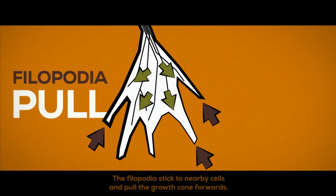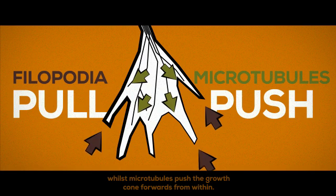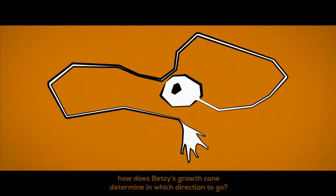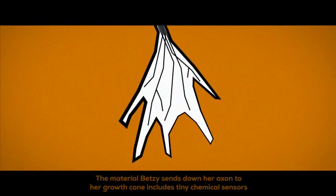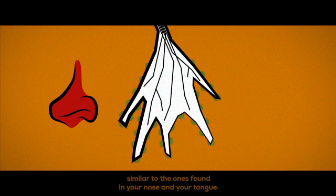The philipodia stick to nearby cells and pull the growth cone forwards whilst microtubules push the growth cone forwards from within. But with so many possible paths to choose from, how does Betsy's growth cone determine in which direction to go? The material that Betsy sends down her axon to her growth cone includes tiny chemical sensors, similar to the ones found in your nose and your tongue.